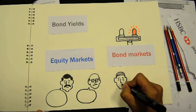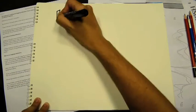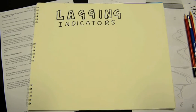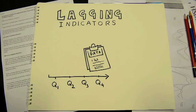Now on to lagging indicators. Unlike a leading indicator, lagging indicators are data published after something has happened, maybe by a few quarters or even a year.